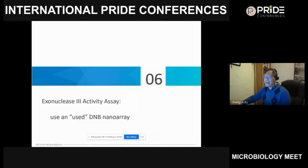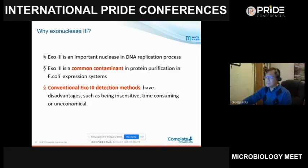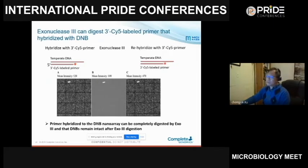Next, we used the DNB array to analyze exonuclease III (ExoIII) activity. ExoIII is a very important enzyme in molecular biology and also a common contaminant in protein purification, especially in E. coli expression systems. Current methods to detect ExoIII activity sometimes lack sufficient sensitivity, so we developed a new approach using the DNB array as a proof of concept.